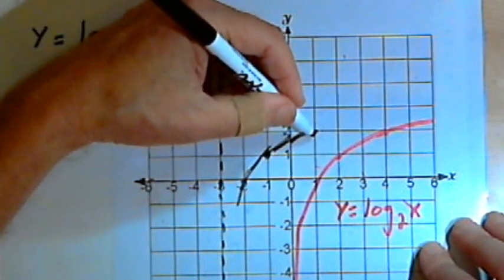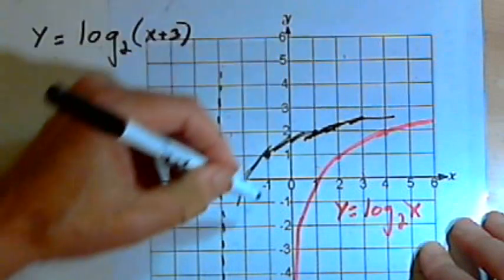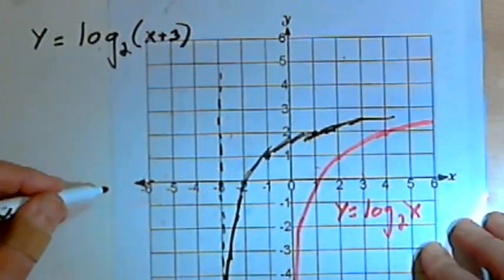And then I can sketch that in also. Okay, so that's just shifted 3 units over to the left.